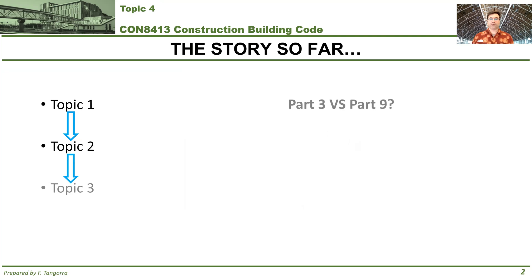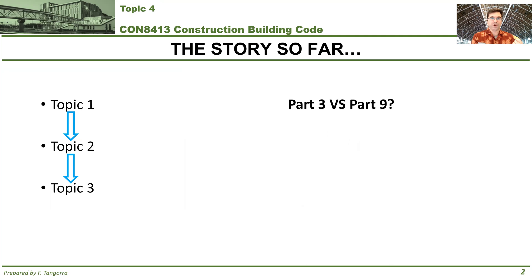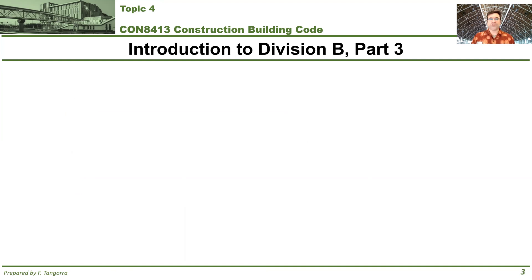And finally, with topic 3, we made it to distinguishing between Part 3 buildings and Part 9 buildings, because it was very important to know which part of the building code Division B we're going to be looking at. Since we're so new at this, we have to figure out a way to get to the right spot right away. So what we're going to do today is dive into Part 3 of Division B of the Ontario Building Code.